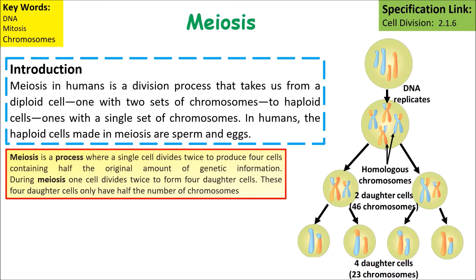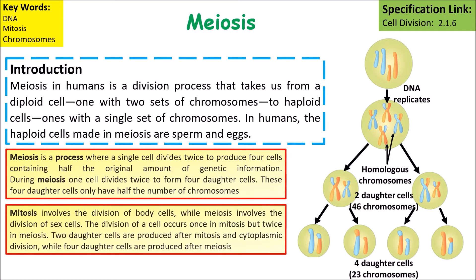During meiosis, one cell divides twice to form four daughter cells. These four daughter cells only have half the number of chromosomes. Whereas mitosis involves the division of body cells, meiosis involves division only in sex cells. The division of cells occurs once in mitosis, but twice in meiosis.